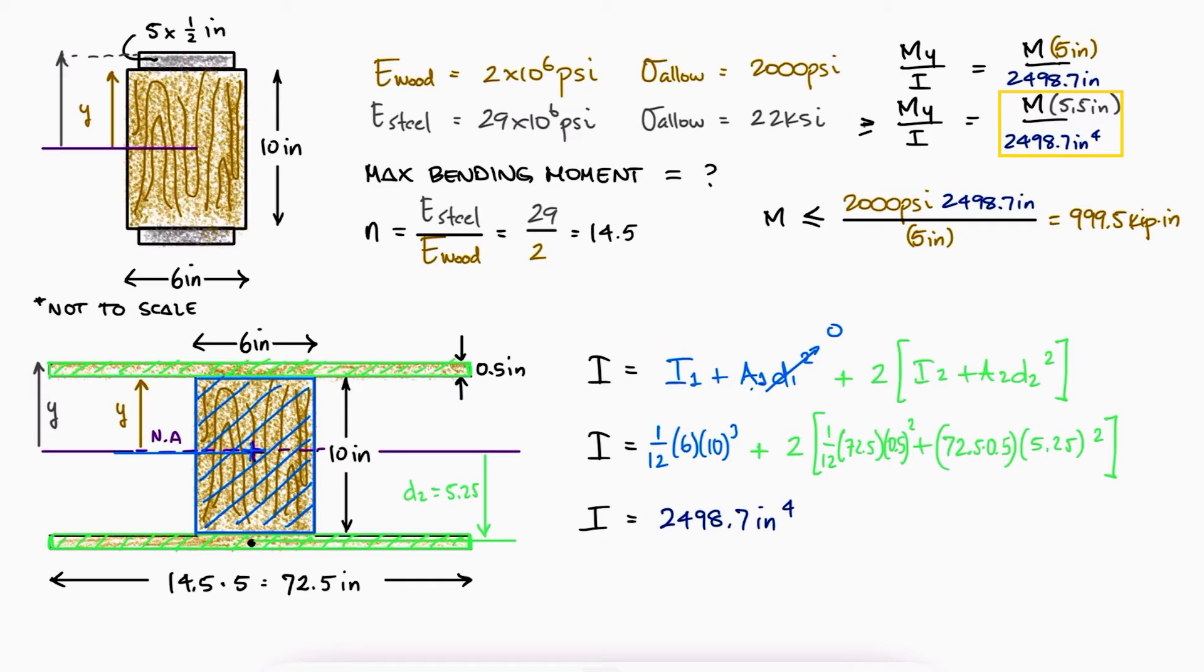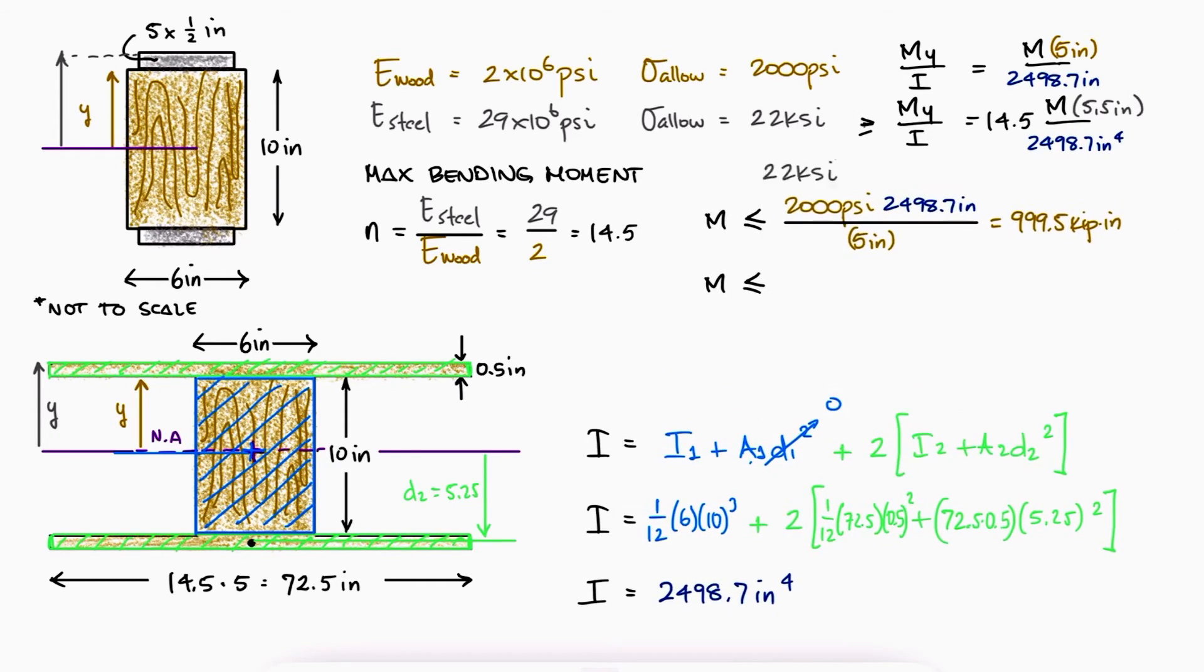The right-hand side of the second inequality is telling us the stress at the top or the bottom when the material is still wood, not steel. Therefore, we still need to multiply it by n to find the expression for the stress in the steel. With n on the right-hand side, we can now solve for M to find the maximum moment for the steel not to fail.